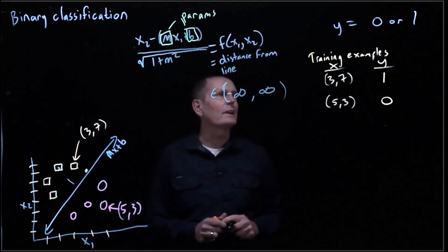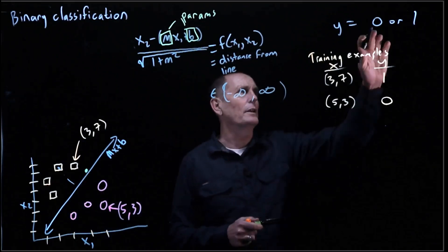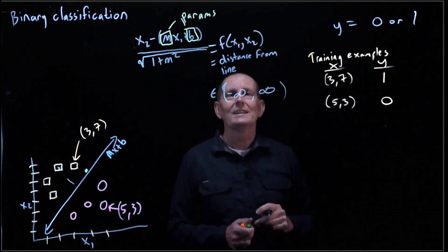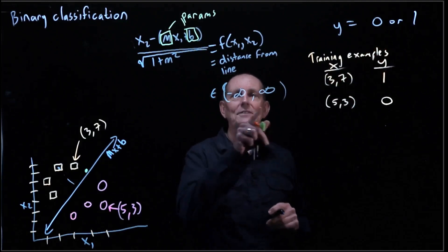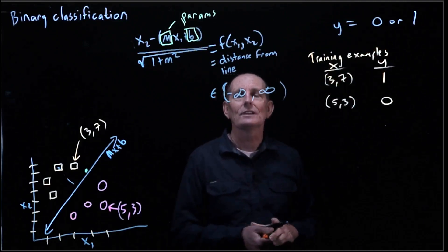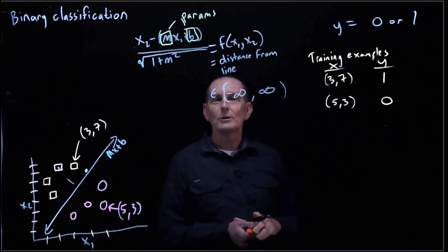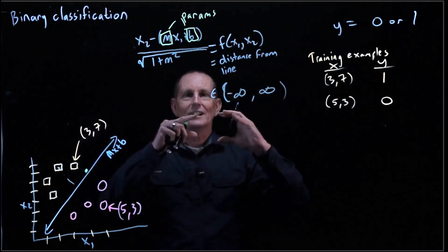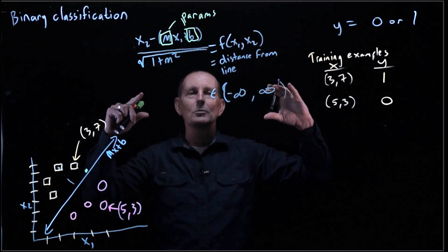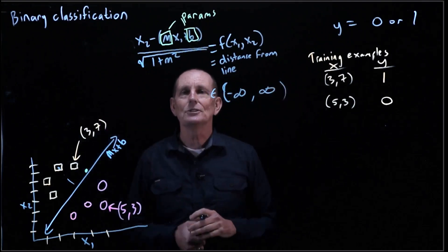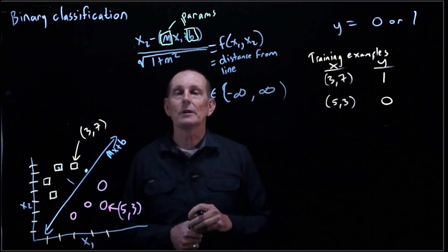The problem is we're trying to compare against the number 0 or 1. That's what y is. And so it's not very useful to have a y hat that's in this range, negative infinity to positive infinity. We'd really like somehow to squish this range down from negative infinity to positive infinity down to something between 0 and 1.